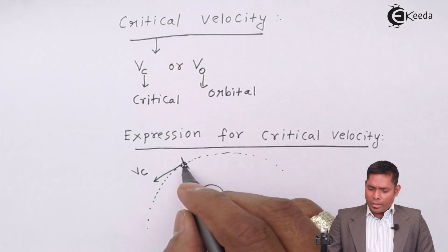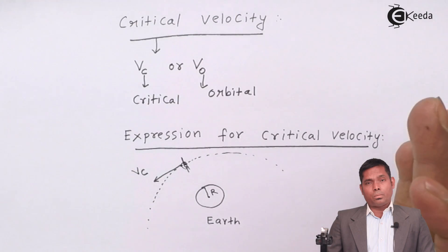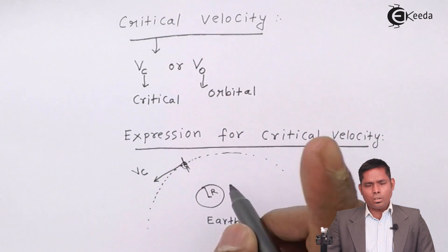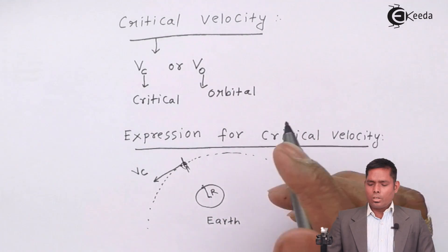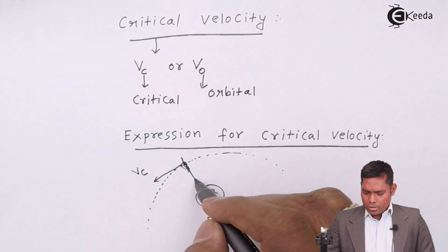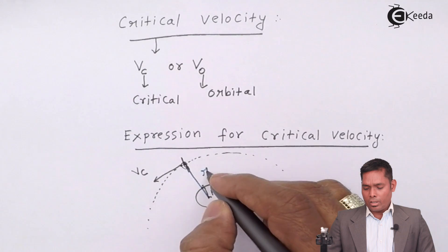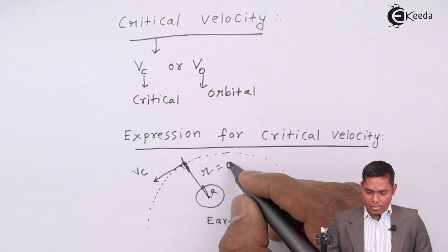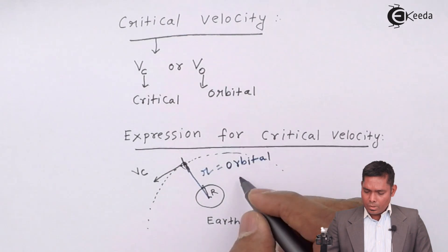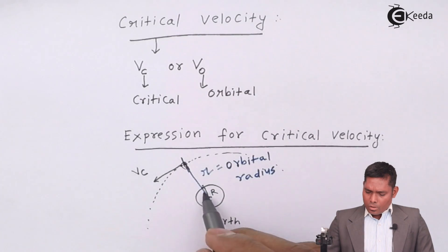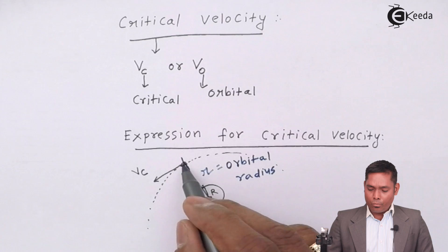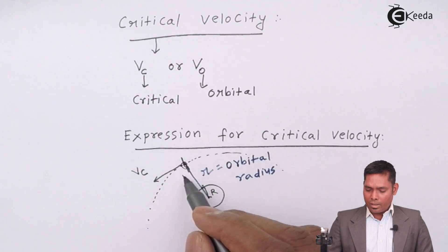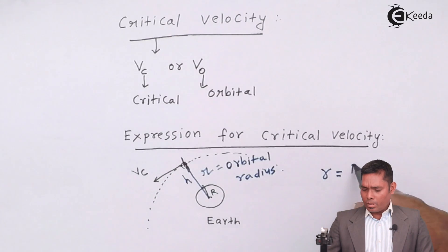Let us see what is the radius of the orbit of this satellite. The orbital radius is the distance from the center of the Earth to the satellite — not from the surface of the Earth, that you have to keep in mind. This distance is the radius of the Earth R, and H is the height above the surface where the satellite is placed. So the total orbital radius r equals R plus H.